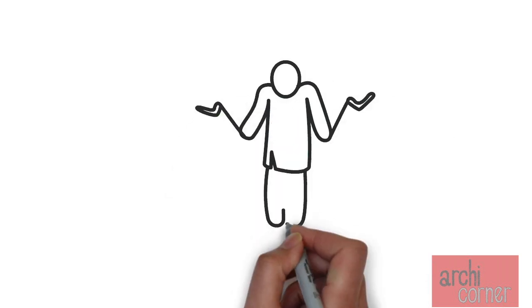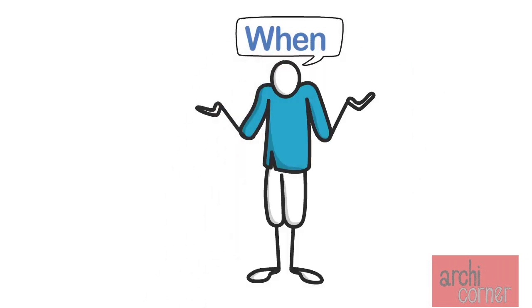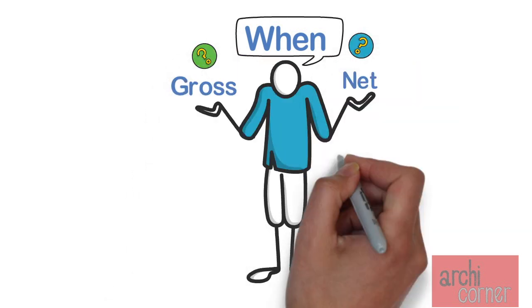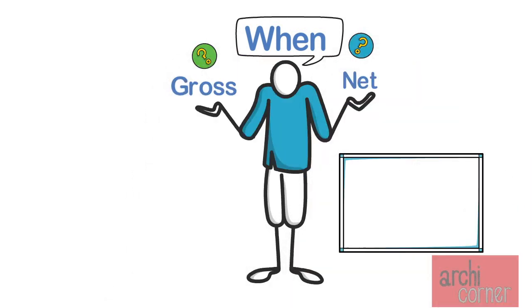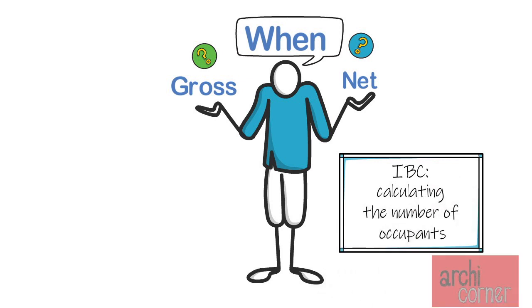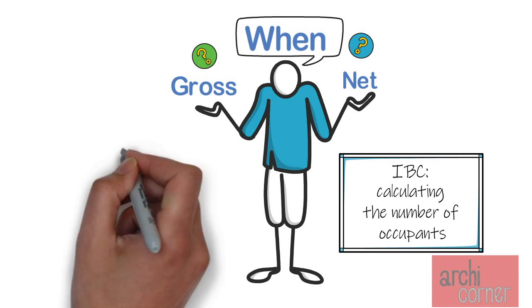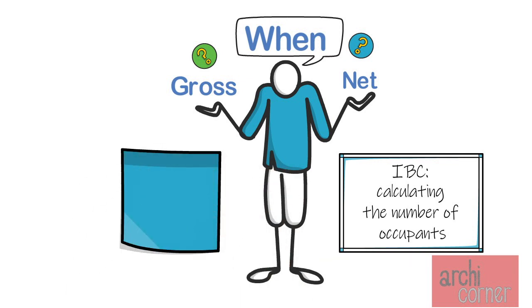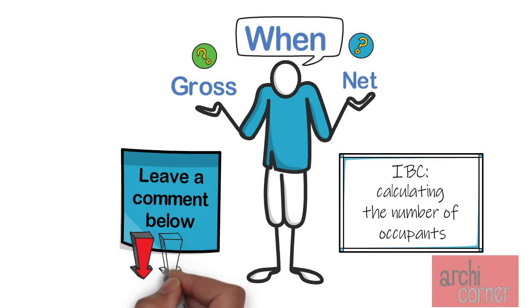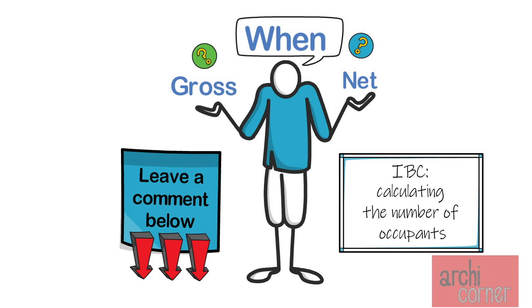Let us start by clarifying when you need net and gross square footages. As far as space planning and architecture goes, the IBC touches on the subject only when you are calculating the number of occupants in an area. To our knowledge, the IBC does not touch the topic of net versus gross square footages in any other topic of the code. If you think otherwise, please leave a comment and let us know.